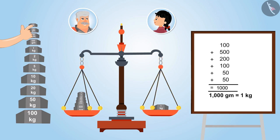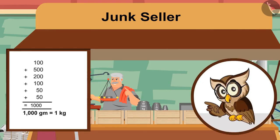Very good. So kids, now you understood. 1 kg is not equal to 100 grams. Instead, it is equal to 1000 grams.